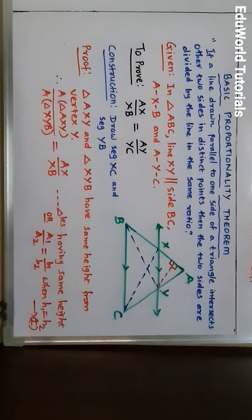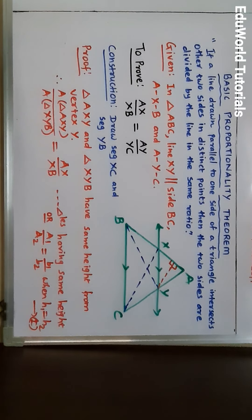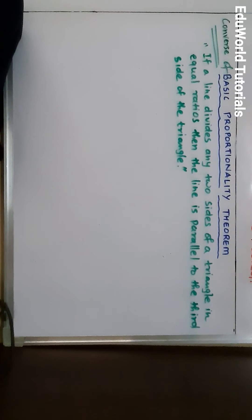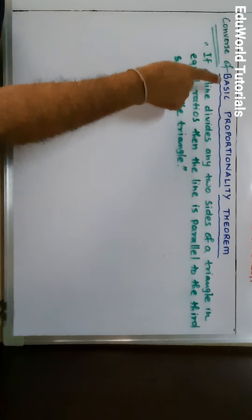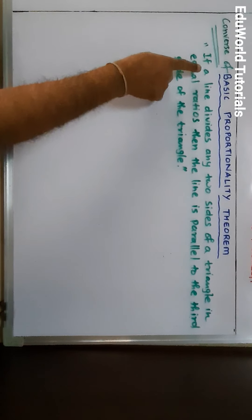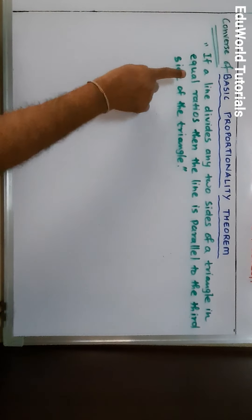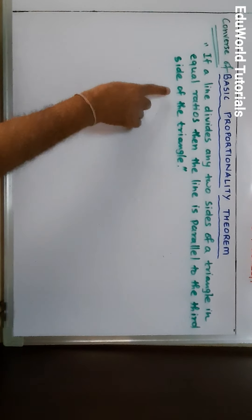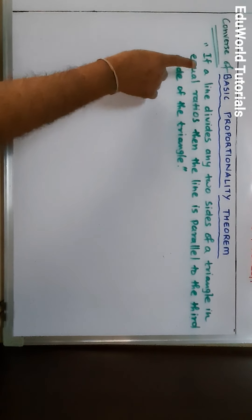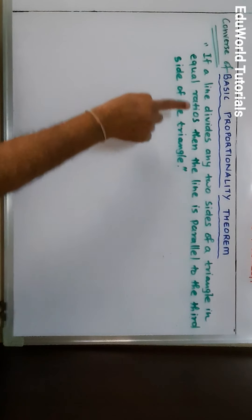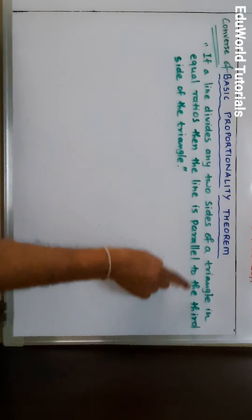Now we will go to the Converse of the Basic Proportionality Theorem. Normally the proof of the converse is not asked, but I will orally give you the idea of the proof. First we will write the statement. The statement says: if a line divides any two sides of a triangle in equal ratios, then the line is parallel to the third side of the triangle.